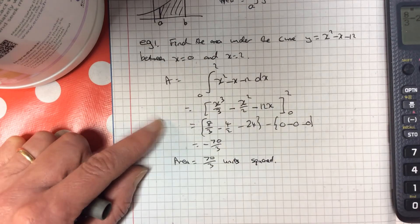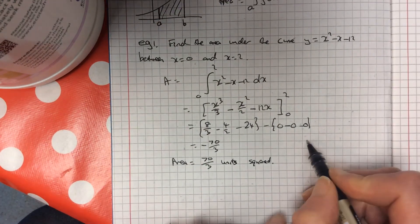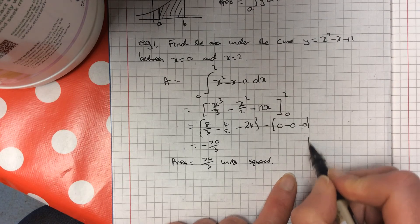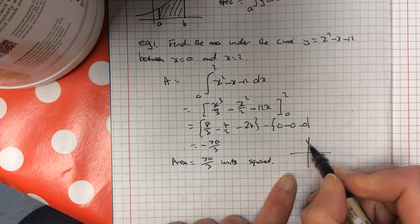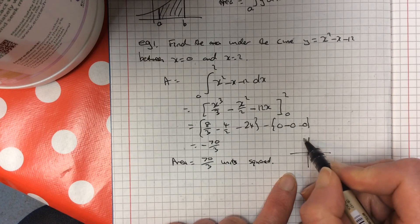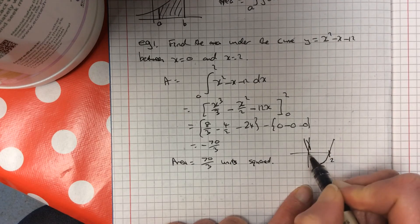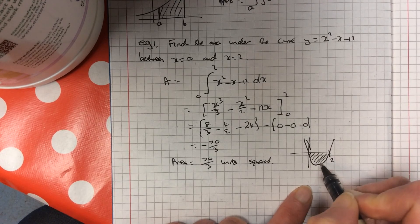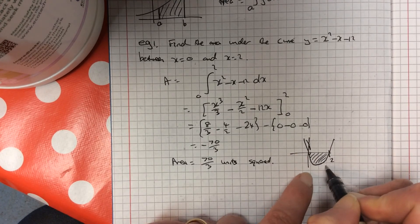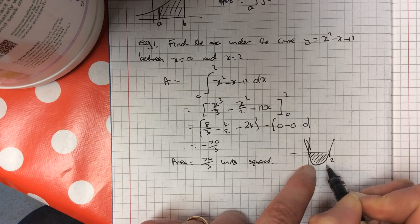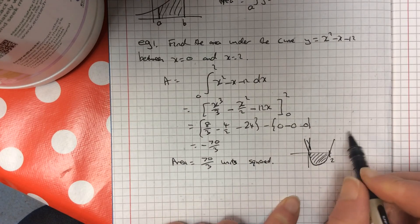For some of you, in case you're wondering, why on earth has she got a negative area in there? Well, maybe that this curve looks something like this. And you're finding the area here. So see why it's in the negative y-axis? So that's why it'd be a negative value. You always give your answer as a positive.